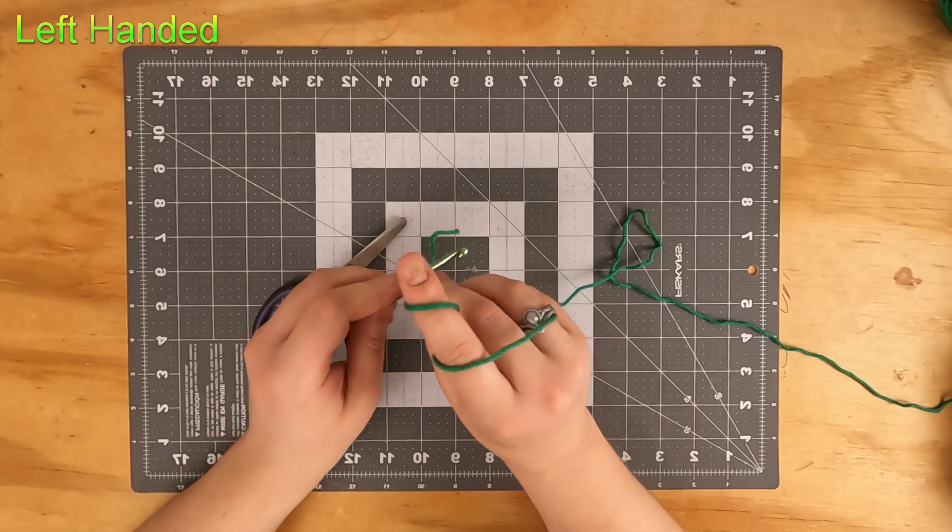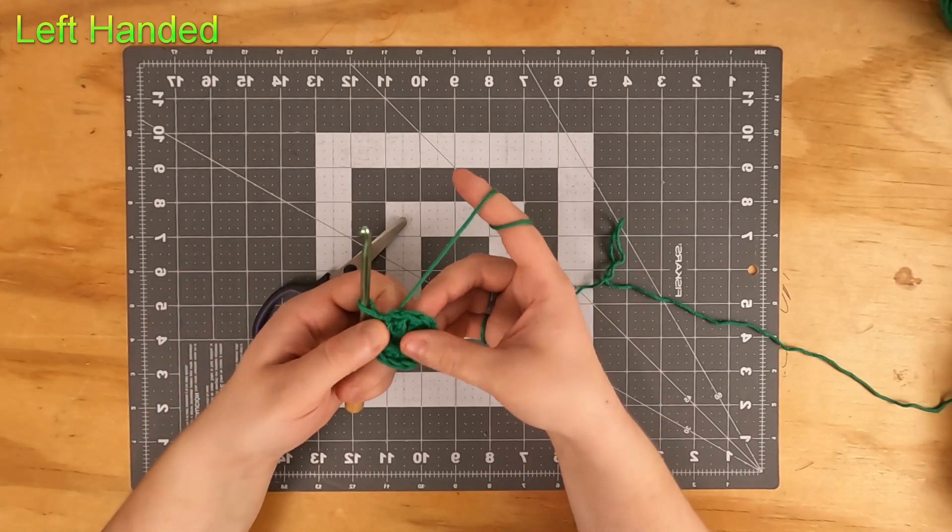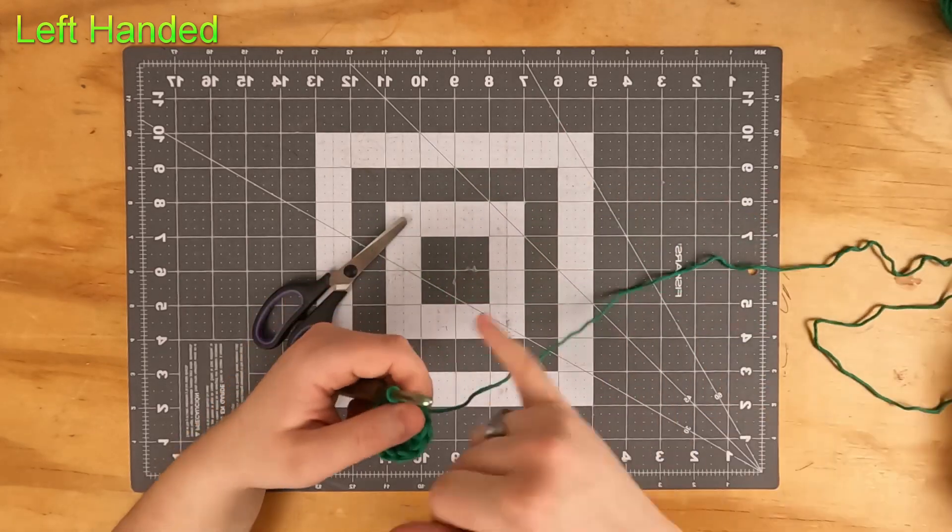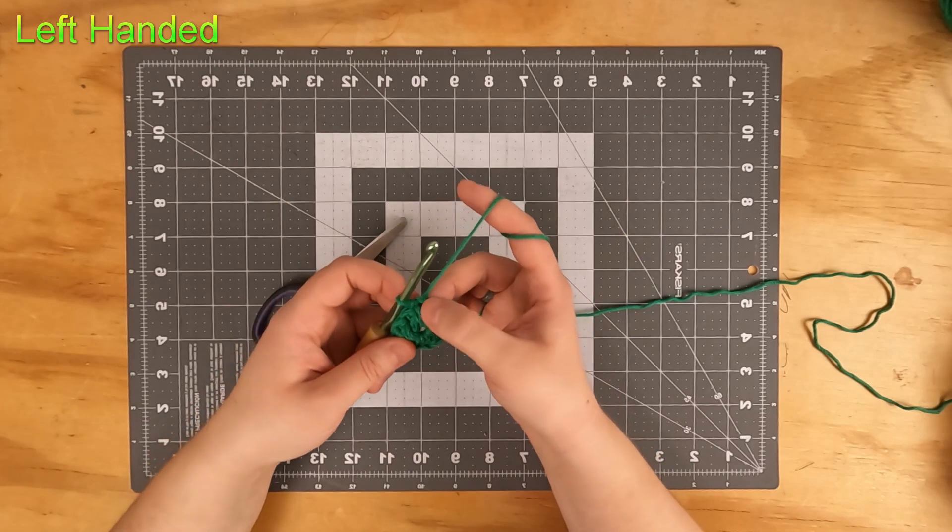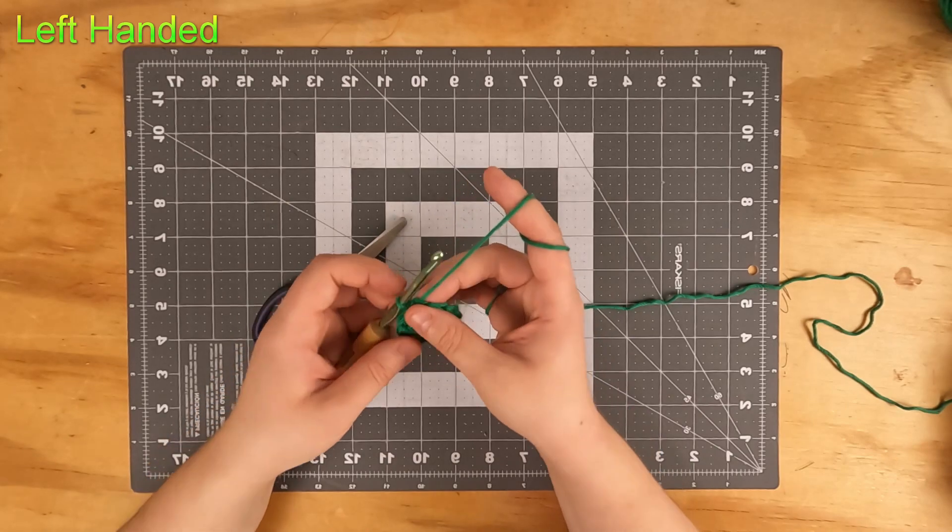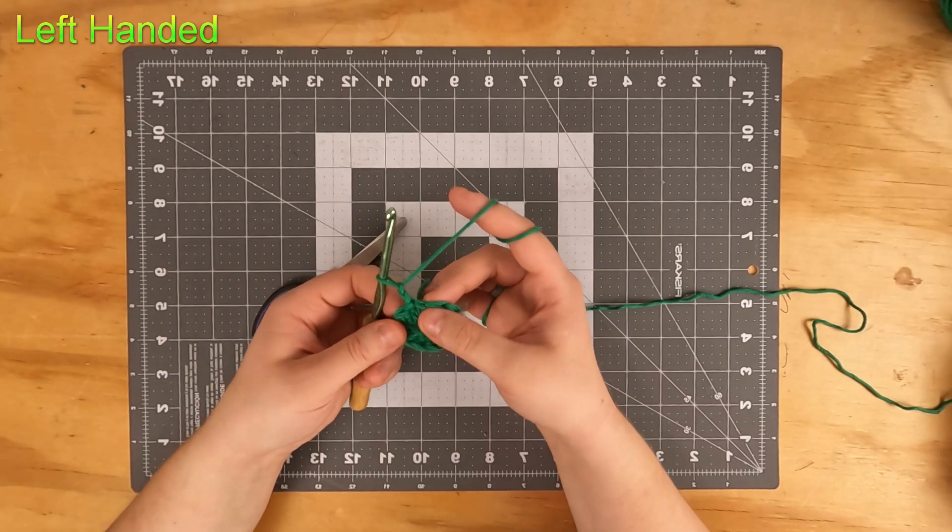So there's our 12 double crochets. Go ahead and slip stitch to the first double crochet. In this project I will not be counting the chain twos as a stitch - it's just going to be the chain two by itself. So when you're counting your stitches, make sure you're counting the actual double crochets themselves.